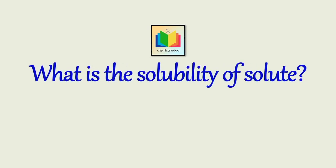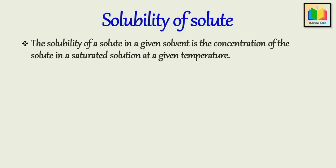Now the next question: What is the solubility of a solute? The solubility of a solute in a given solvent is the concentration of the solute in a saturated solution at a given temperature. But what is meant by solute, solvent, and solution? The mixture of solute and solvent is called a solution. Solute is the minor component in a solution which is dissolved in a solvent. And solvent is the major component in a solution in which the solute is dissolved.